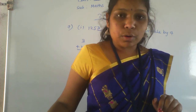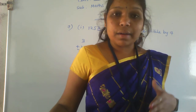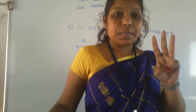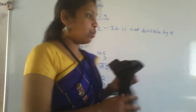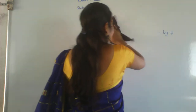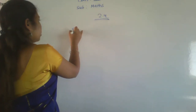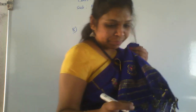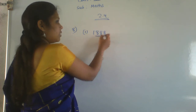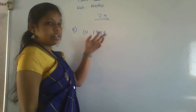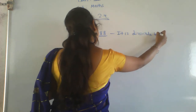Eighth question: check the divisibility of the following numbers by 8. The rule for 8 is that the last 3 digits should be divisible by 8. First number is 1888. The last 3 digits are 888. Is 888 divisible by 8? Yes, 8×111=888. Therefore it is divisible by 8.